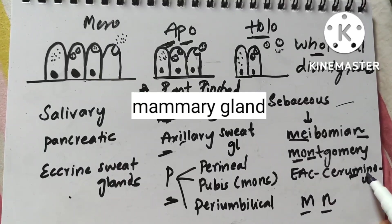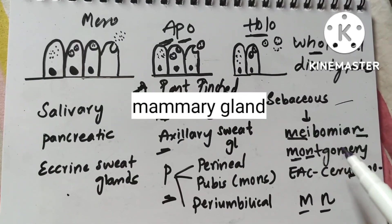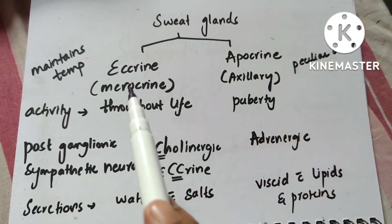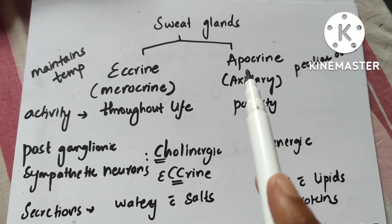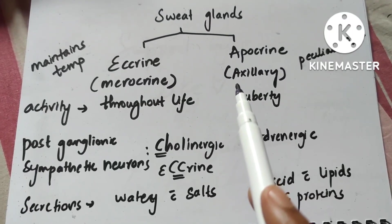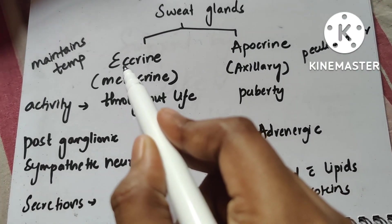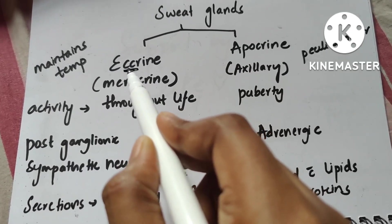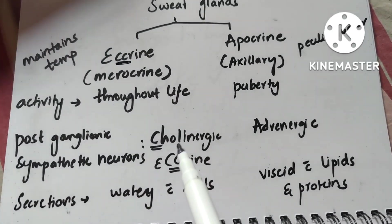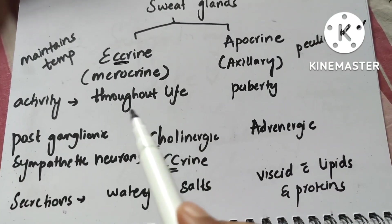Sweat glands are of two types: eccrine and axillary. Eccrine comes under merocrine and axillary is under apocrine — remember that point. Eccrine spelling has CC in it, so it is cholinergic post-sympathetic neurons. Whereas apocrine — A for adrenergic post-ganglionic sympathetic neurons.